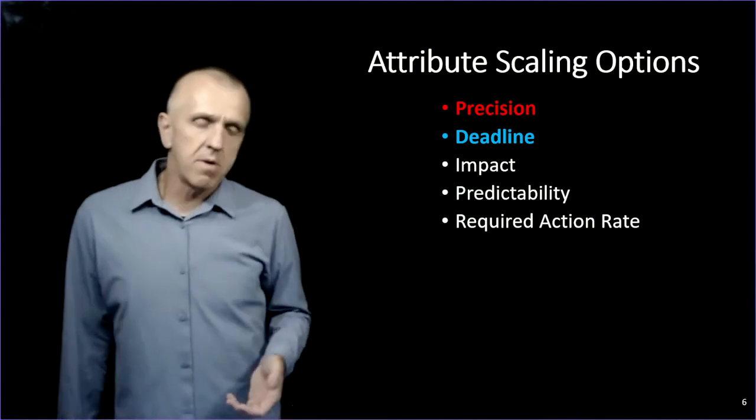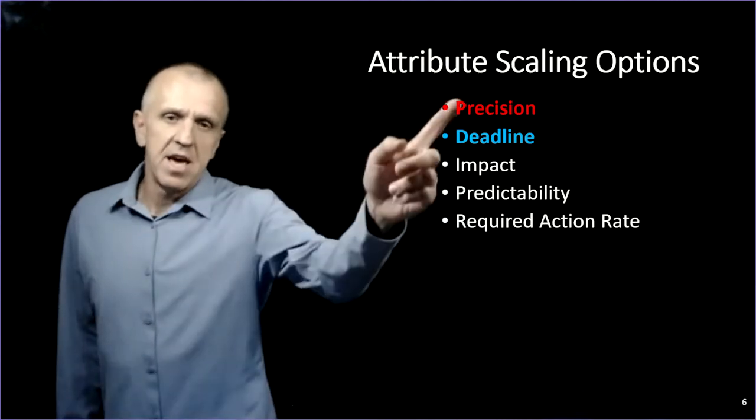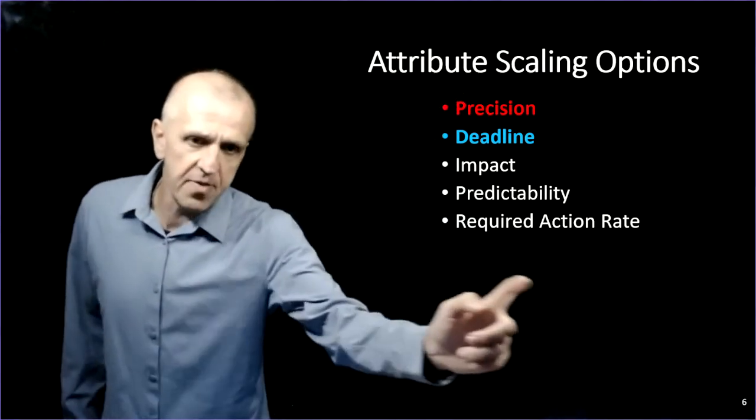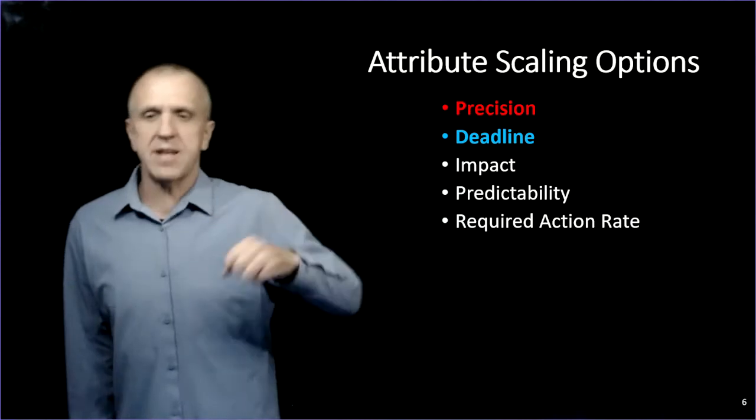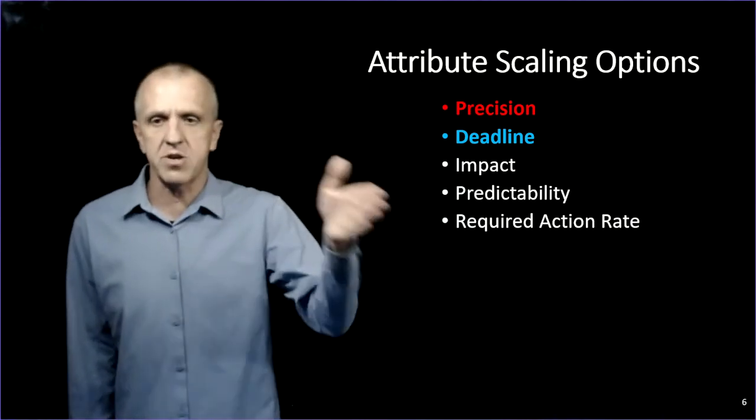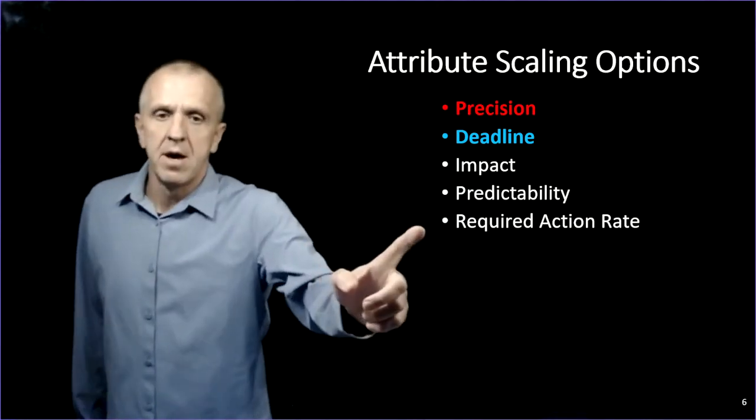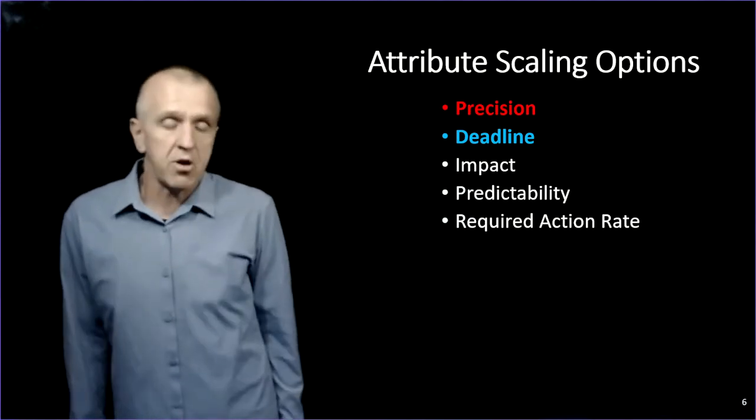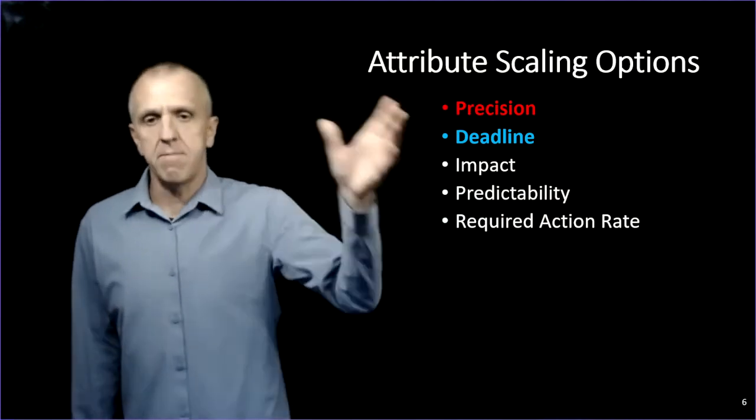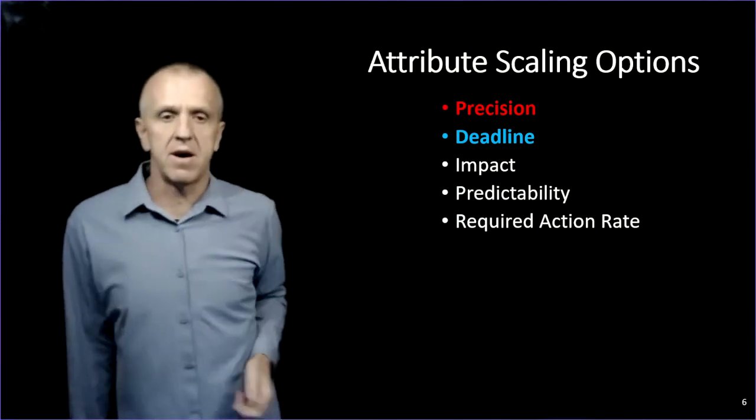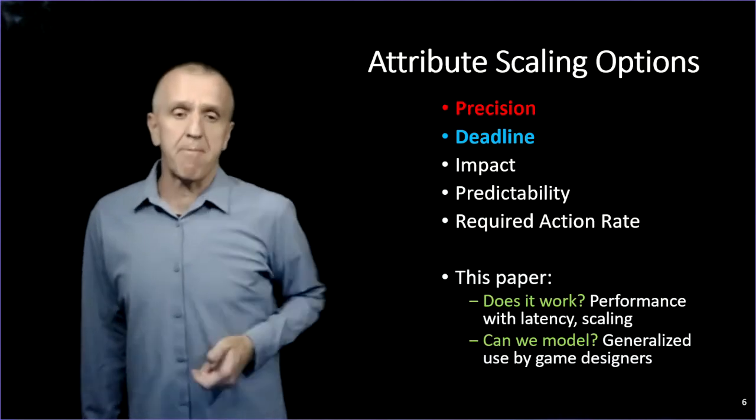So how to adjust those? Well, probably the adjustments depend upon lots of stuff. What game you're playing, but in practice, it probably has to do with attributes about the game actions. And these are some attributes that have been proposed by researchers: precision, that's how precise the action is; deadline, how soon does it get enacted; how important is the action, that's the impact; can you predict what's going to happen; what is the rate, how rapidly do you have to actually provide input. These have all been proposed as ways that actions are impacted based on latency.